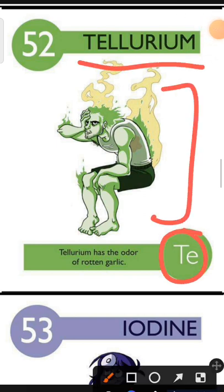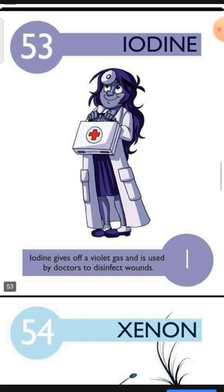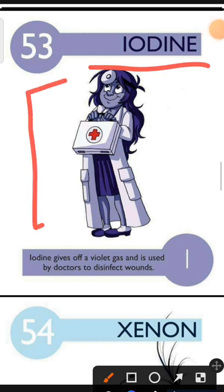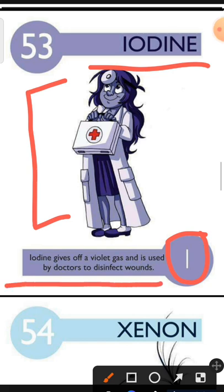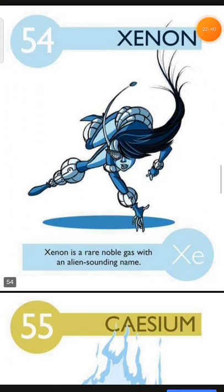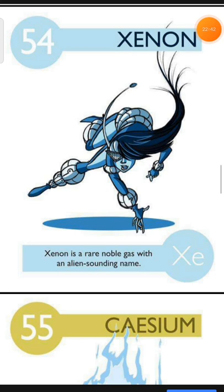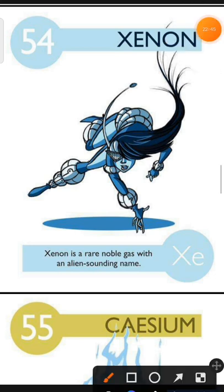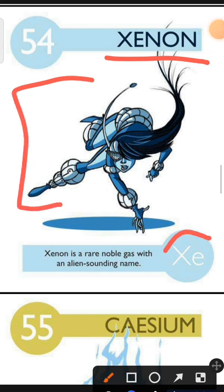Element number 53 is Iodine. The characteristic of Iodine is: Iodine gives off a violet gas and is used by doctors to disinfect wounds. Element number 54 is Xenon. The characteristic of Xenon is: Xenon is a rare noble gas with an alien-sounding name.